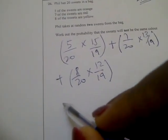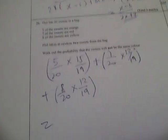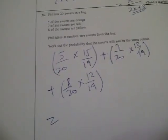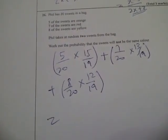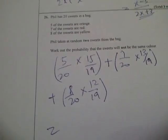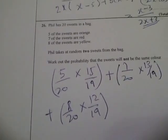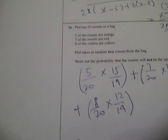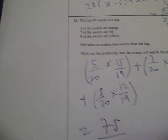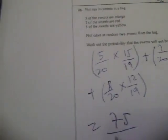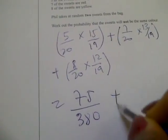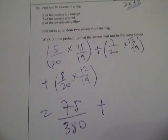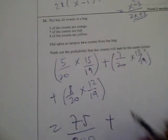Now calculating this we have that 5 times 15 is 75 over 20 times 19, which is 380, plus 13 times 7 is 91 over 380.